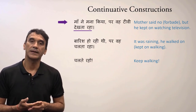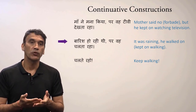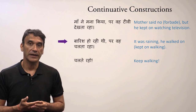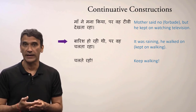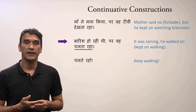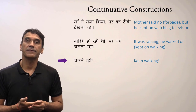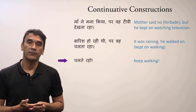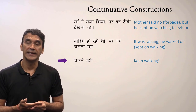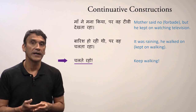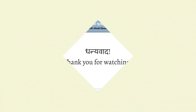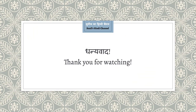One more example: BAARISH HO RAHI THI PAR WO CHALTA RAHA — it was raining, but he walked on, he kept on walking. WO CHALTA RAHA. There is another phrase quite often used in Hindi: CHALTA RAHO — keep on walking, keep walking.